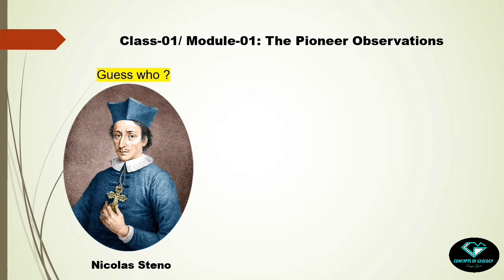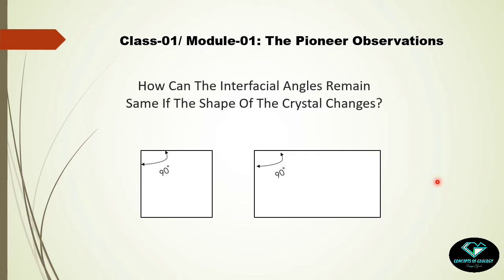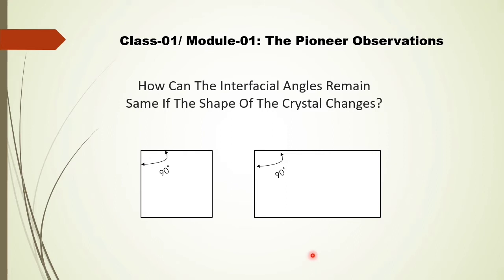The first law of crystallography states: the angle between the equivalent faces of crystals of the same mineral are always the same, despite the size and shape of the crystal. Standing today, this observation is not very hard to think about, but we still become confused about how the interfacial angles can remain the same if the shape of the crystal changes. To understand this, look at two objects — a square and a rectangle. The equivalent faces of both have the same right angle between them, even though the shapes are different.